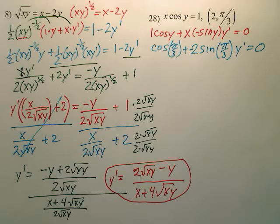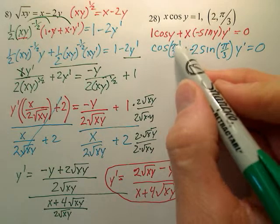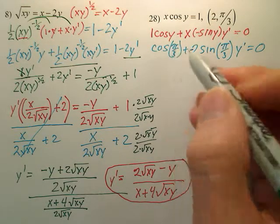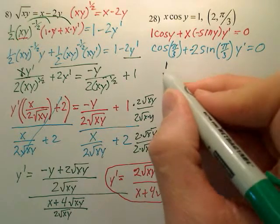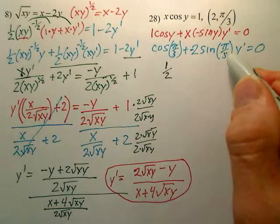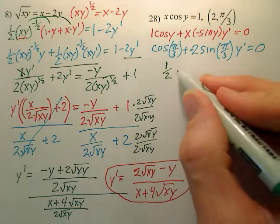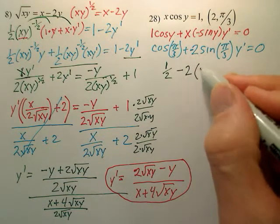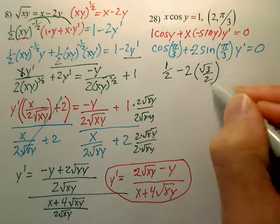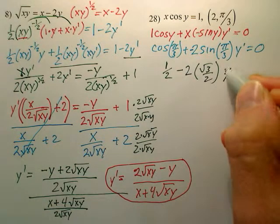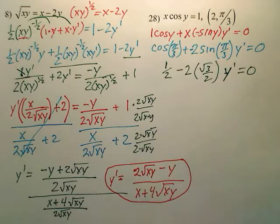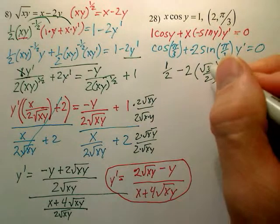So from there, I'm going to get y prime by itself, but what's cosine π over 3? That is 1/2. What is sine π over 3? Is that √3 over 2? So that's going to be minus 2 times √3 over 2. And then don't we have a y prime here, and it equals 0?